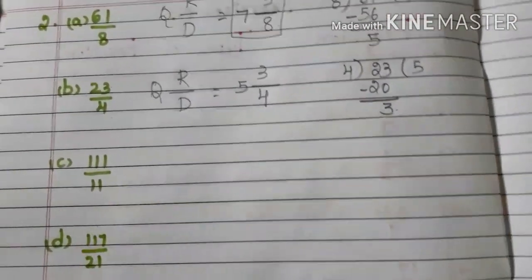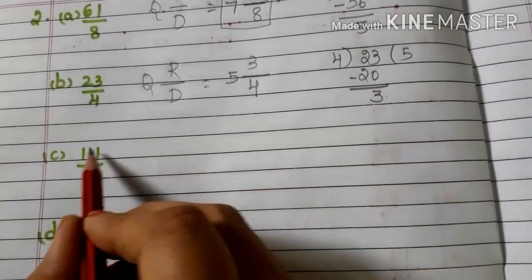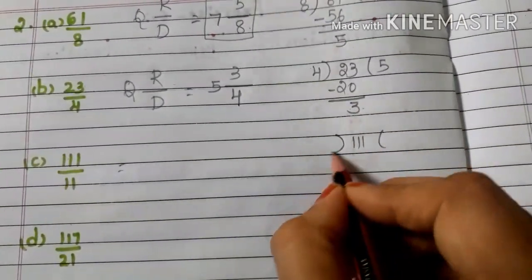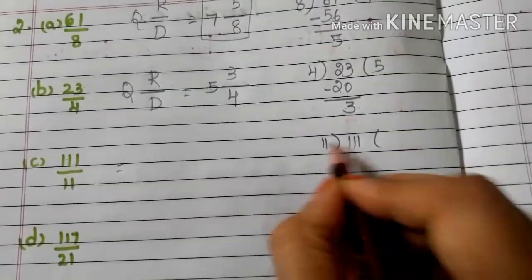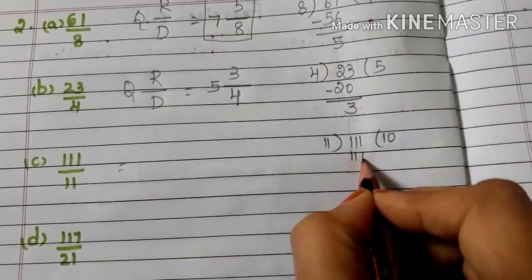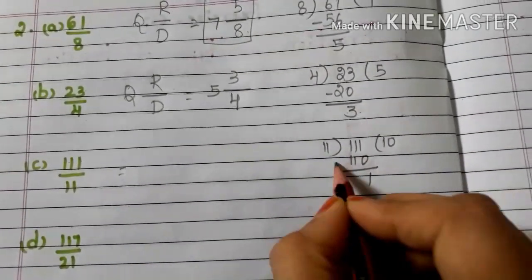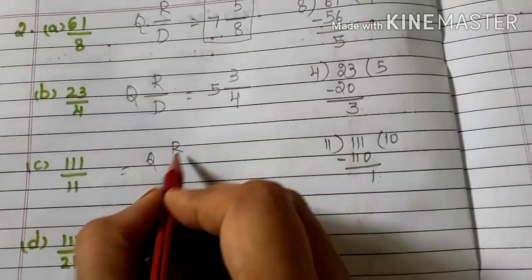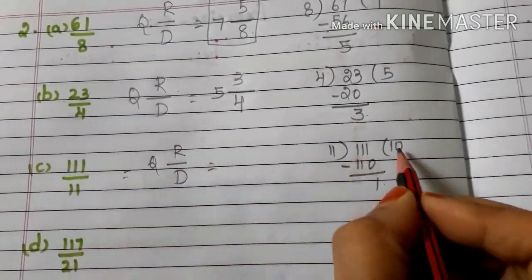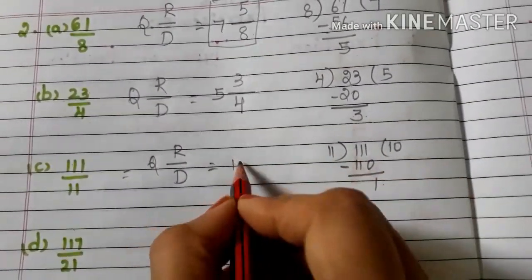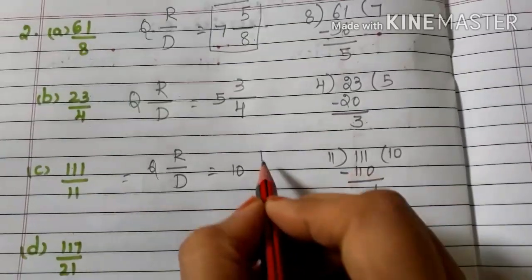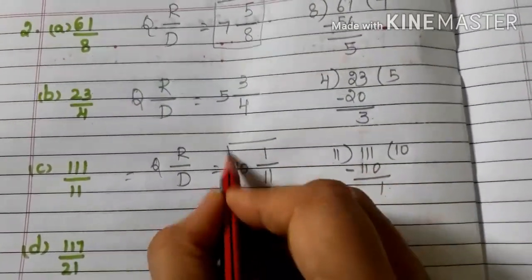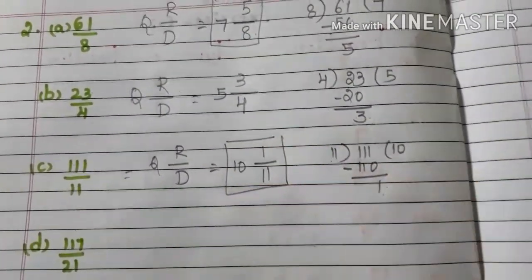C: 111/11. First divide 111 by 11. 11 tens are 110, so the remainder is 1. Write the mixed fraction Q R/D. Quotient is 10, remainder is 1, divisor is 11. So the mixed fraction is 10 and 1/11.